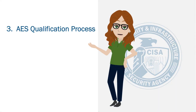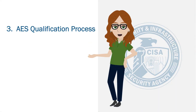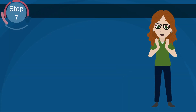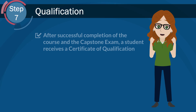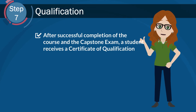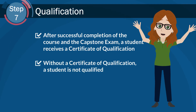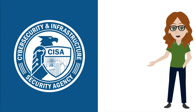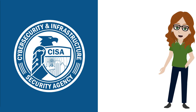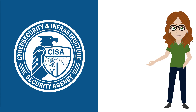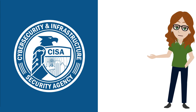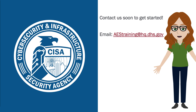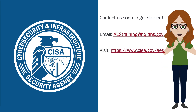With prerequisites and courses complete, let's review the AES qualification process. The final step is the certificate of qualification. Congratulations — you passed your AES capstone exam and received your certificate of qualification. The certificate means that you're qualified as an AES assessor in your training course role. Thank you for your interest in the CISA AES training program. We hope you now have a better understanding of how to participate in AES training, how to become qualified as an AES assessor, and the different assessment roles. For more information, email AES training at hq.dhs.gov or visit cisa.gov/AES.